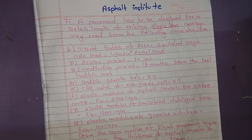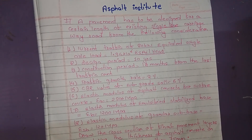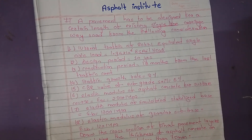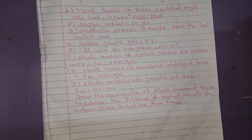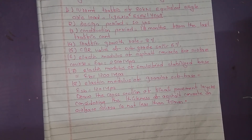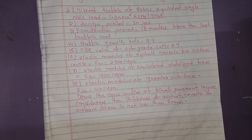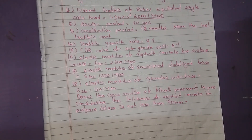Traffic growth rate is 8%. CBR value of subgrade soil is 5%. Elastic modulus of asphalt concrete for surface course is given, along with the elastic modulus of emulsified stabilized base and elastic modulus of granular subbase. Draw the cross section of the final pavement layer, considering the thickness of asphalt concrete on surface course is not less than 75 mm.